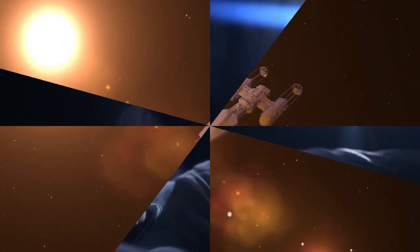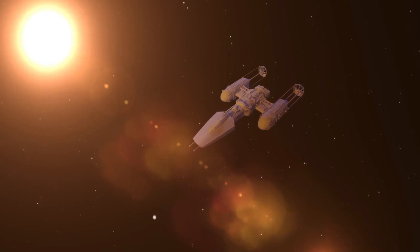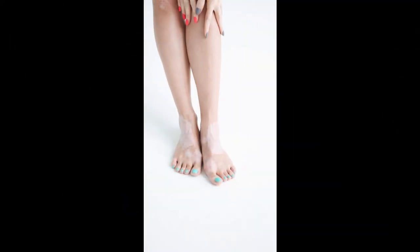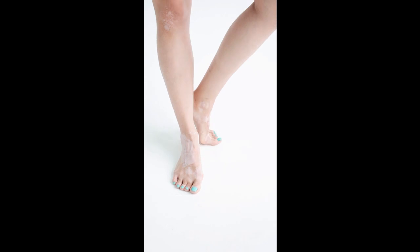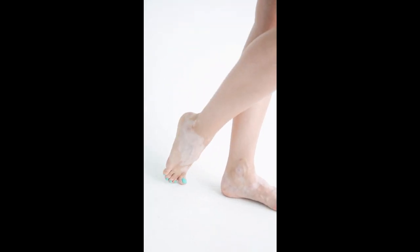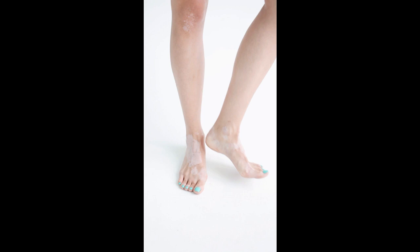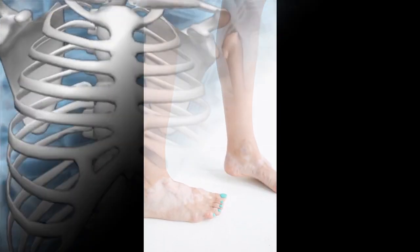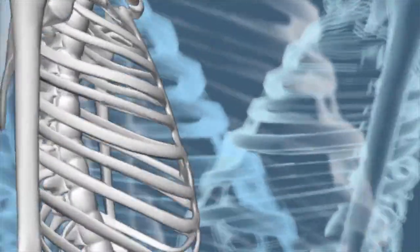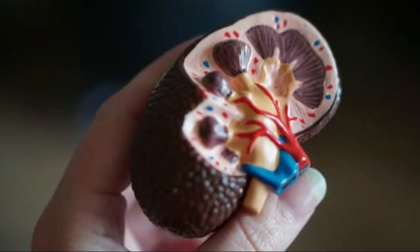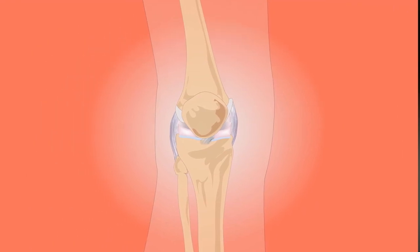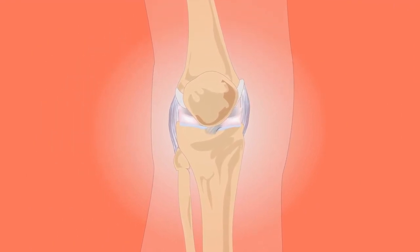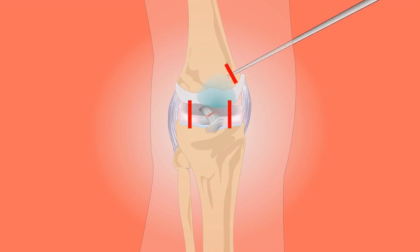In space, the amount of weight the bones must support is reduced to zero. While making any movements, the bones are not subjected to the same level of stress they would otherwise endure on earth. This breaks down the calcium normally stored in bones and releases it into the bloodstream. Increased levels of calcium in the blood lead to a higher incidence of kidney stones. The high level of calcium also reflects a high level of bone mass loss, which makes the bones weak and increases the risk of fracture.